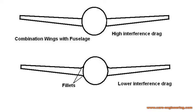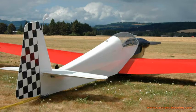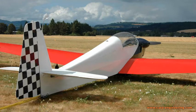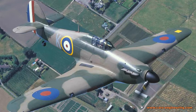Reducing interference drag means adding a fillet between the parts. The radius of the fillet should not be constant but start small at the leading edge and increase in radius towards the trailing edge, as shown in the sketch of a wing-fuselage junction. This motor glider is an example of a wing-fuselage intersection without a fillet and with high interference drag. An airplane with a well-faired wing-fuselage intersection and lower interference drag is the Hurricane. Other common places where you have interference drag are where parts like struts, antennas, and tail surfaces attach to the rest of the structure.